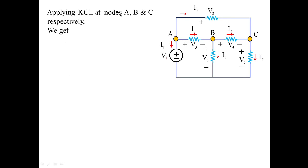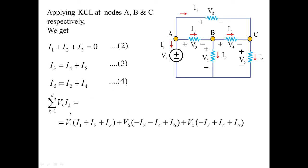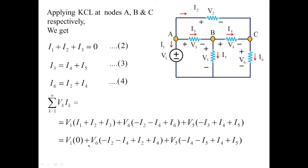Applying KCL at nodes A, B, and C respectively: at node A, I1 plus I2 plus I3 equals zero; at node B, I3 equals I4 plus I5; at node C, I6 equals I4 plus I2. Substituting these values into equation one, we get V1 times 0 plus V6 times 0 plus V5 times 0, so everything cancels and we are left with zero. Hence we have proved Telegan's theorem.